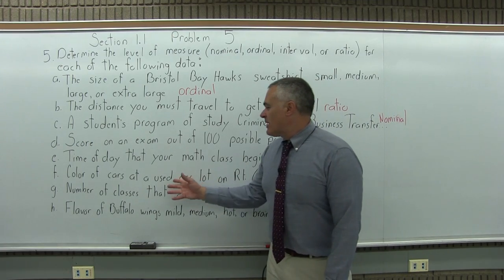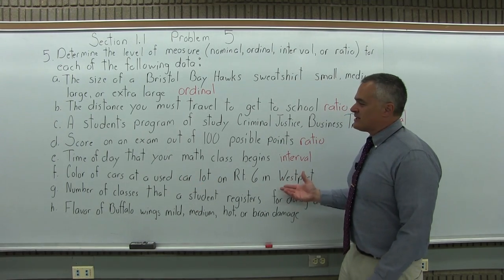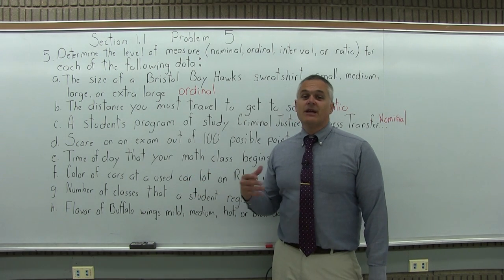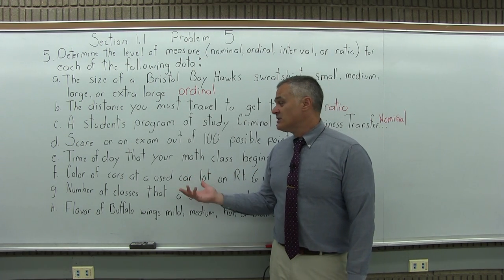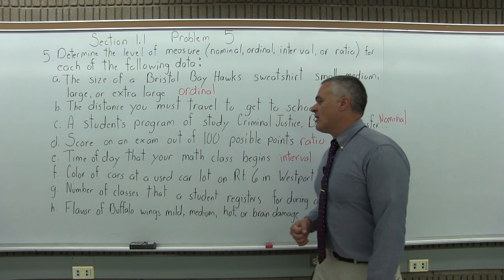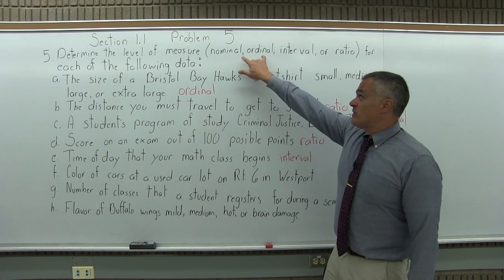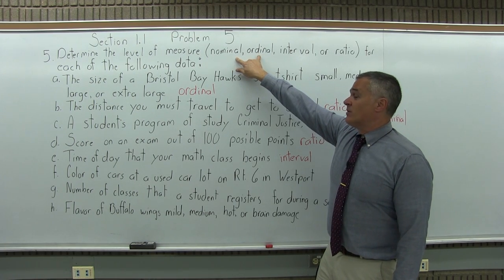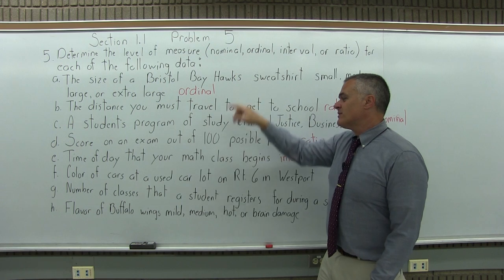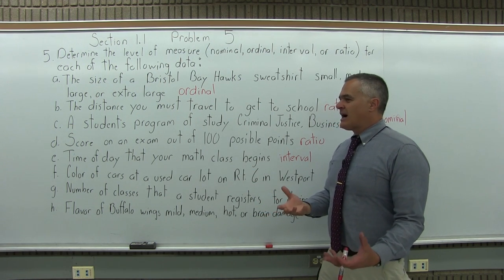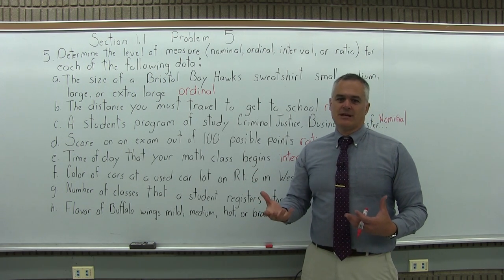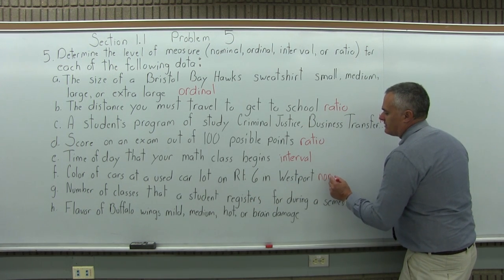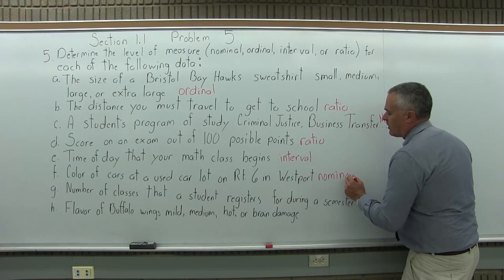F, color of cars in a used car lot on Route 6. I like to bring the used cars on Route 6 into some of the questions. So you're getting answers that are not numbers. They're colors: red, white, green, et cetera. So it's going to be one of the first two, names, not numbers. Nominal means name only, no implied rank. Ordinal means name with an implied rank. The different colors certainly do not imply a rank. Is a green car any more or less of anything than, say, a tan car? No. So this would be nominal, name only with no implied rank.